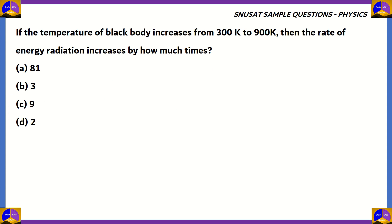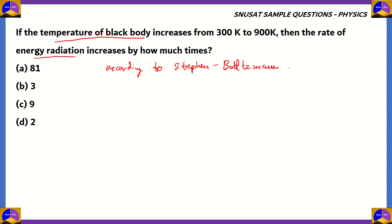So, how do we solve this question? Well, we're talking about the temperature of a black body and the energy radiation from a black body. So, we're going to be using the Stefan-Boltzmann law. According to this law, the energy radiation is proportional to the fourth power of the temperature.